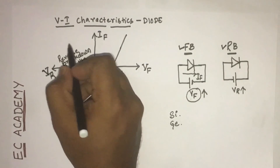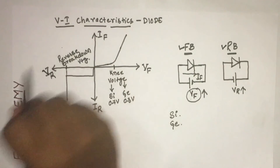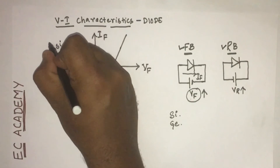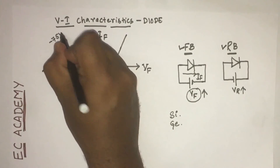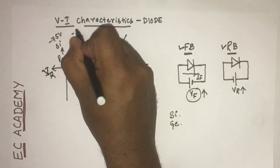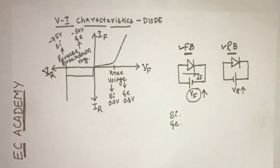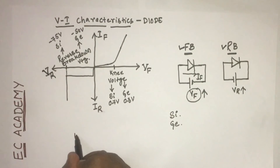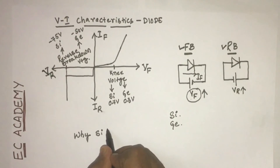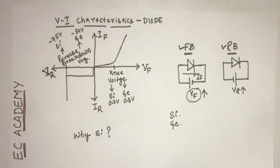The reverse breakdown voltage for the silicon diode is minus 75 volts and for germanium diode is minus 50 volts. There is a very popular question which is asked: why is silicon diode preferred over germanium diode?